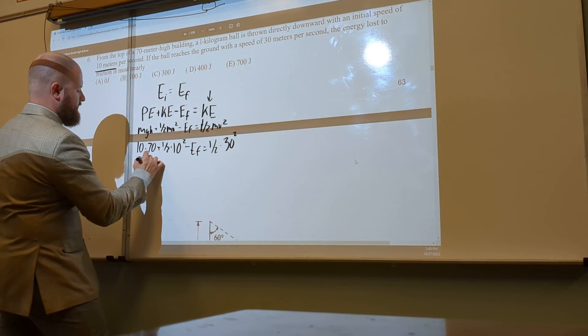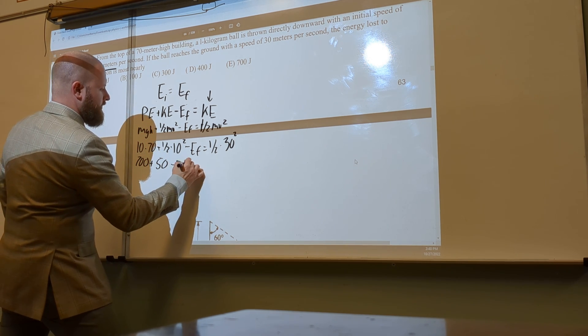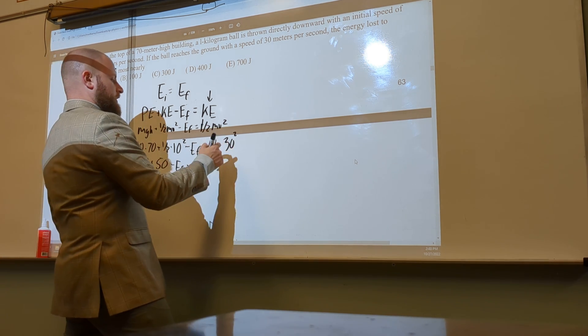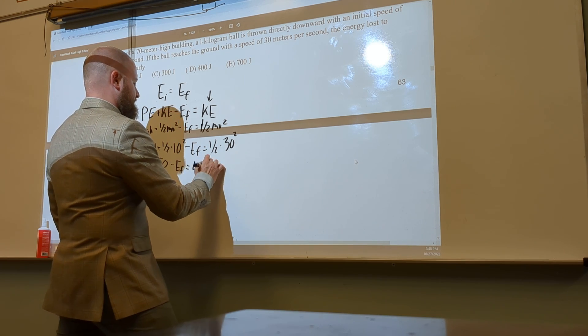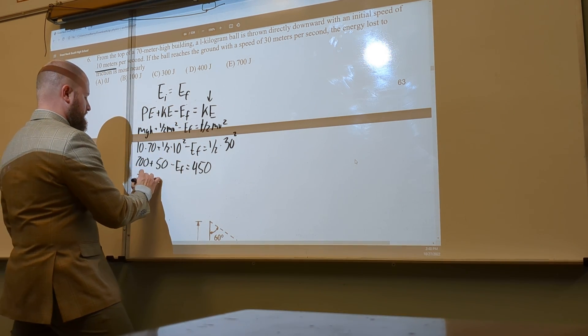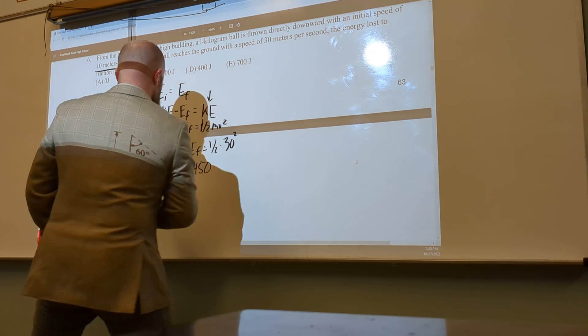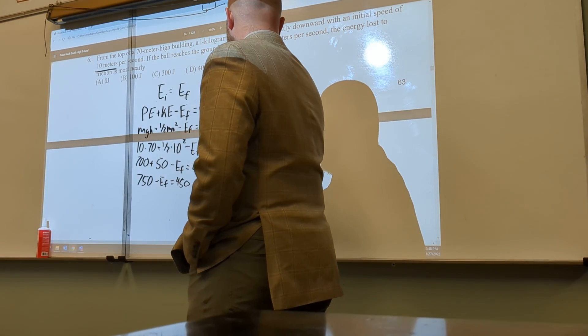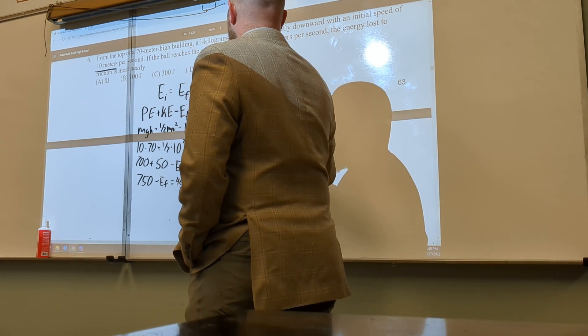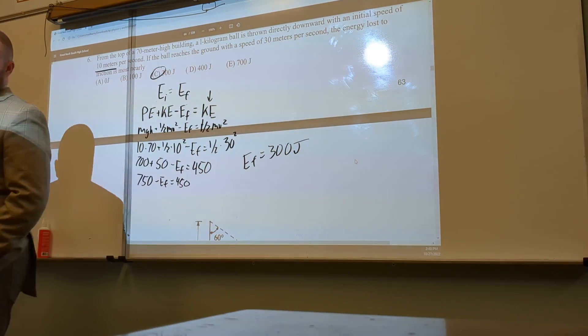I have 700 plus 50 minus Ef equals 450. So I have 750 minus Ef equals 450. So Ef equals 300 joules. That should be C.